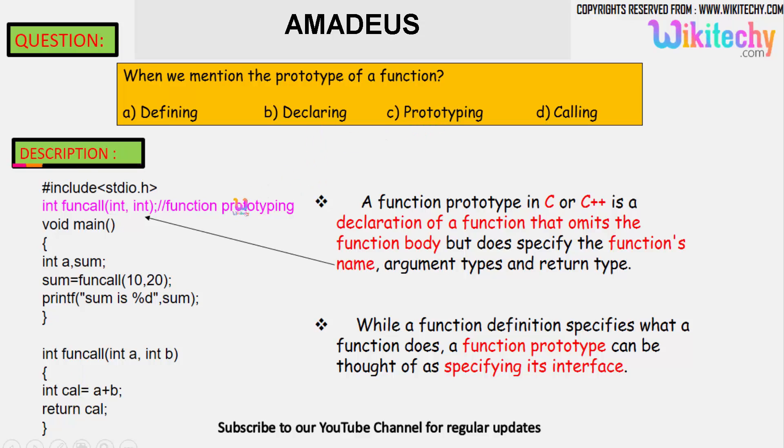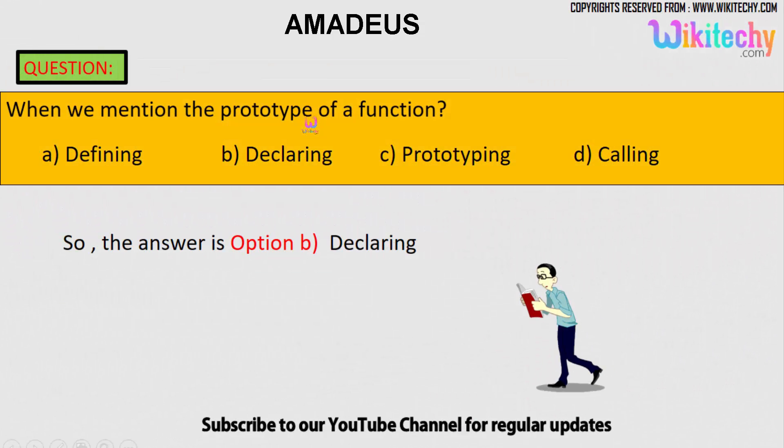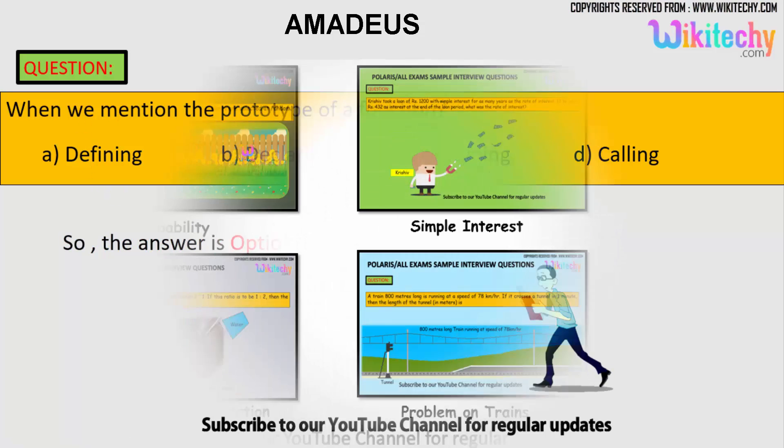Function prototyping is also called declaring in C and C++. Calling - we are not calling it. So the exact answer is declaring. The option is B. That's the answer. We have lots of interesting interview and exam questions for you.